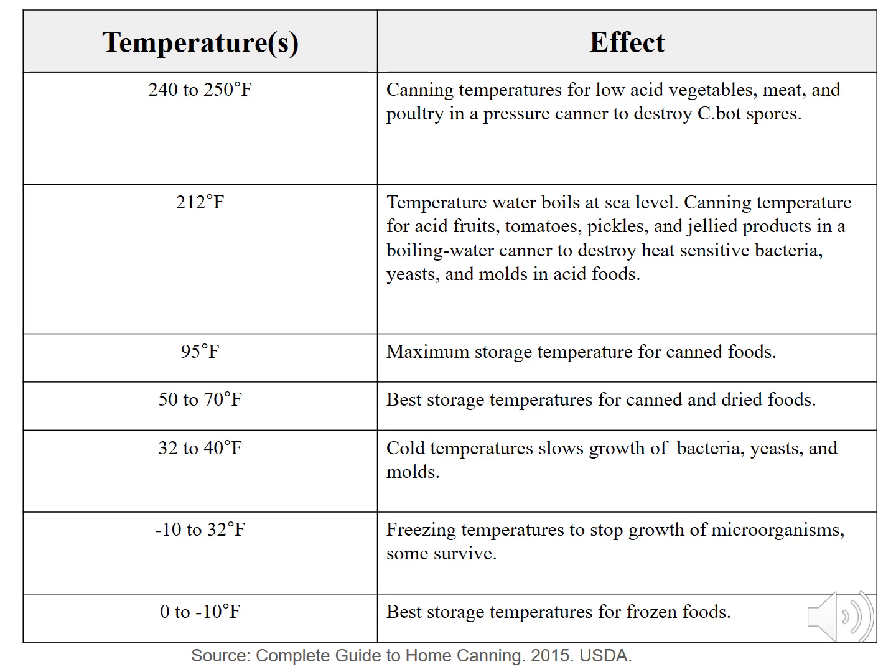Let's look at food preservation methods to keep food out of the temperature danger zone of 40 to 140 degrees Fahrenheit. We will start at the top of the chart. 240 to 250 degrees Fahrenheit is the temperature range that a pressure canner will reach at 10 to 15 pounds of pressure. These temperatures will inactivate enzymes and destroy heat-resistant spores like Clostridium botulinum. 212 degrees Fahrenheit is the temperature reached when using a boiling water canner. Boiling water temperatures destroy spoilage microorganisms like yeast and molds and heat-sensitive bacteria like Salmonella.